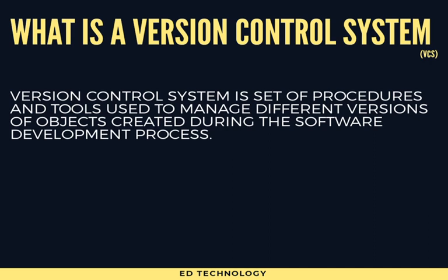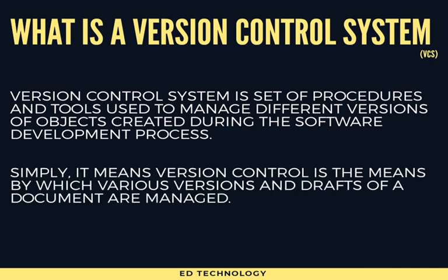So what exactly is a version control system? A version control system is a set of procedures and tools which is used to manage different versions of objects created during the software development process. Basically, version control is something which manages different versions — drafts — in a system which can be retrieved whenever required.